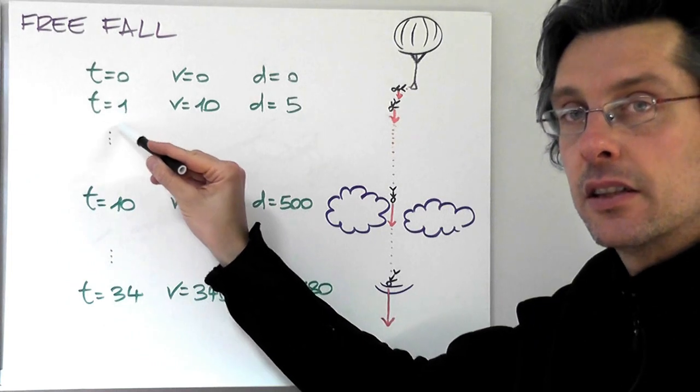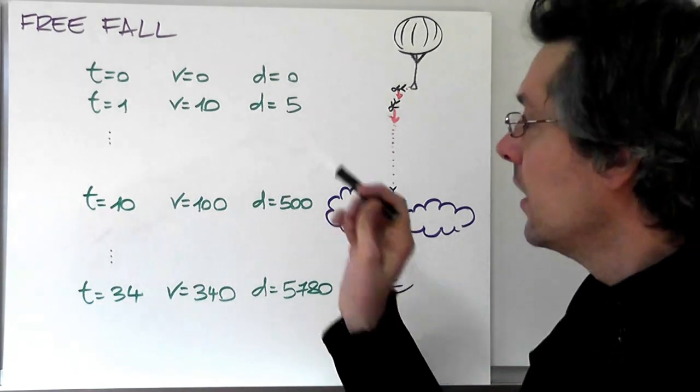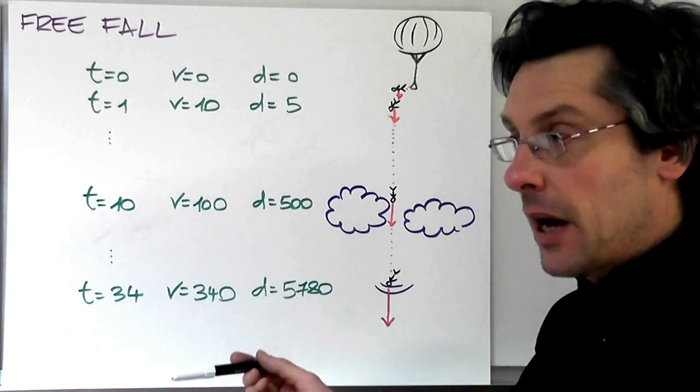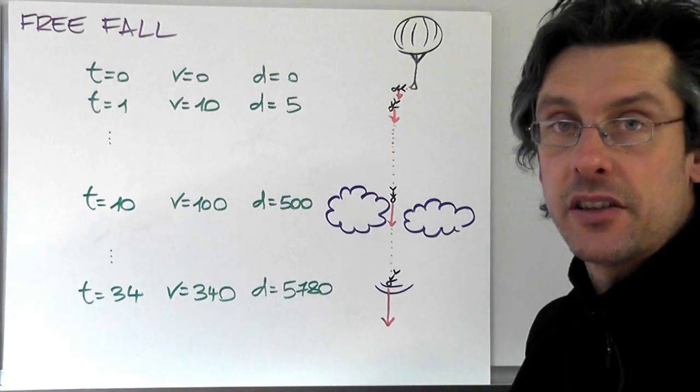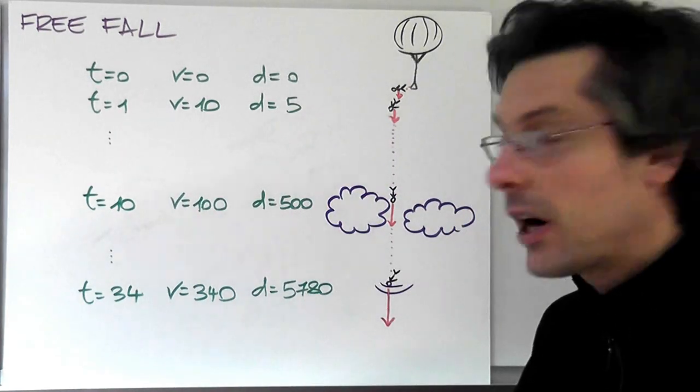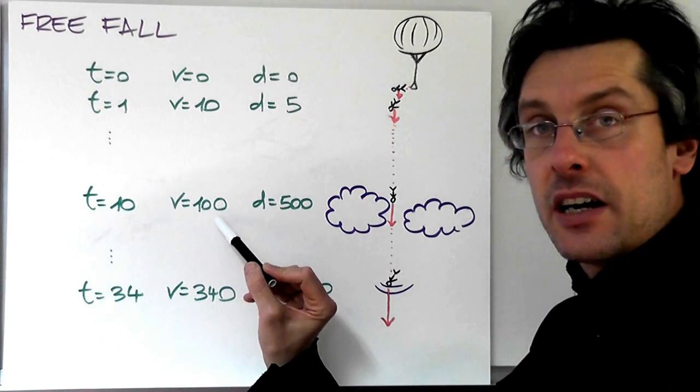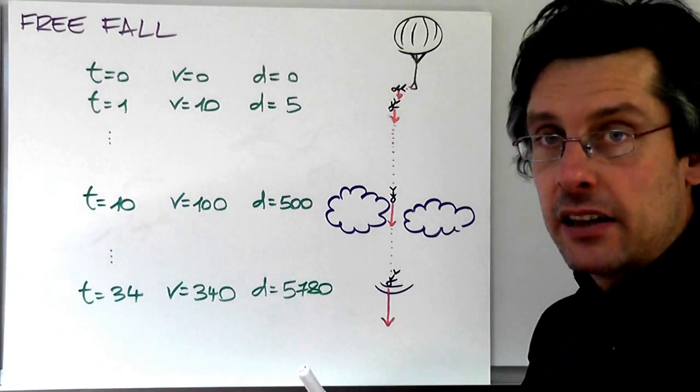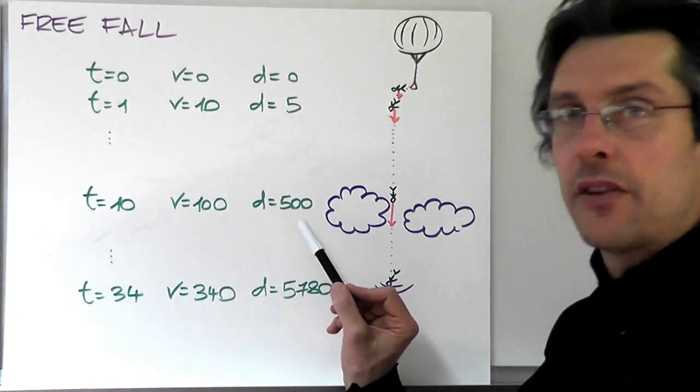After one second, the speed will be 10 times 1, which makes 10 meters per second. And the distance traveled is one-half times g, so 5 times T squared. One squared is one, so that means 5 meters. As we go down in the falling of Felix Baumgartner, we can see that after 10 seconds, he has already reached a speed of 100 meters per second. That is, if we completely neglect air friction. And he has traveled a distance of 500 meters, half a kilometer.